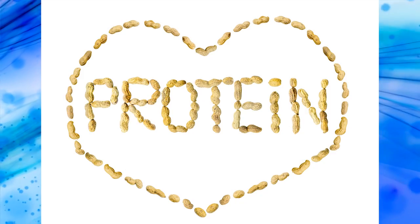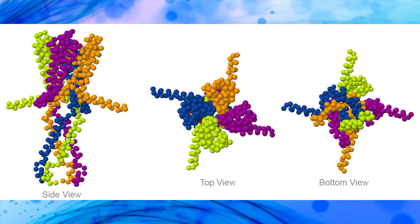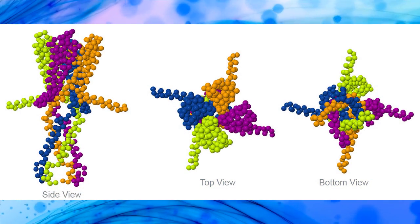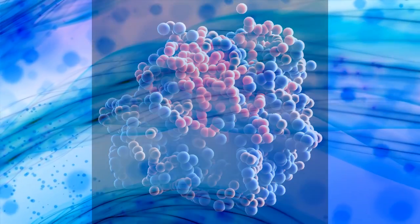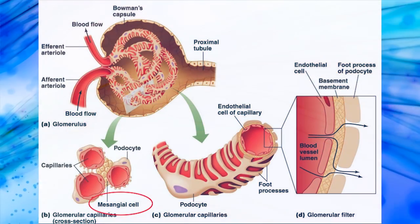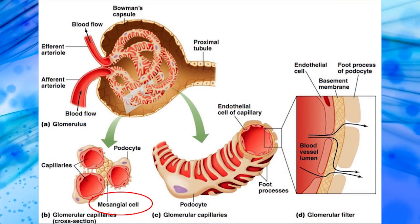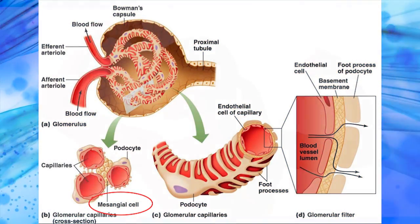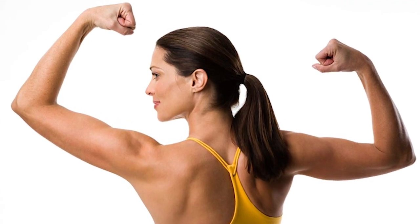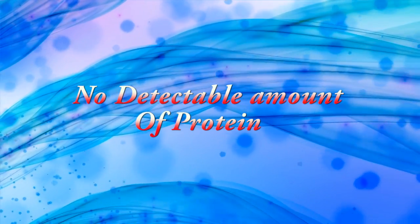Proteins are consisting of one or more long chains of amino acids. Proteins are large biomolecules. Therefore, usually proteins are not filtered through the glomerular membrane. So, healthy people's urine does not contain a detectable amount of proteins.